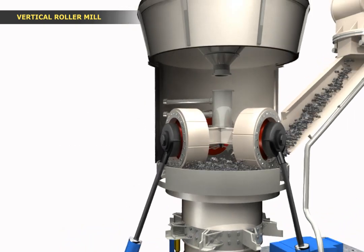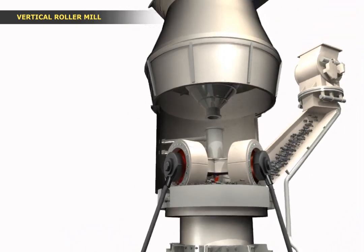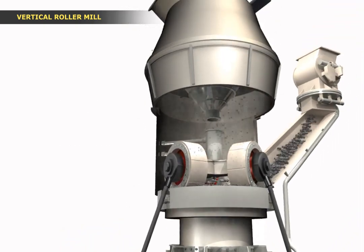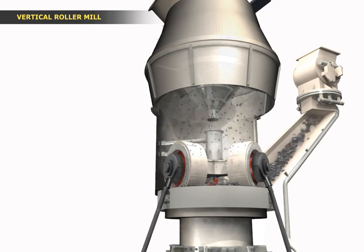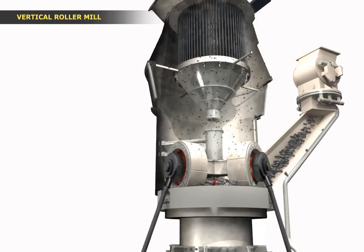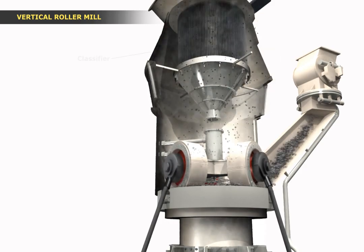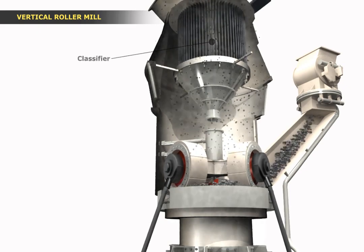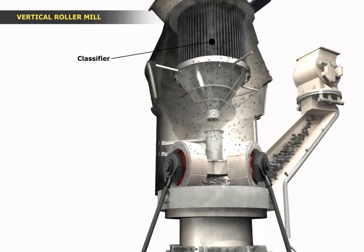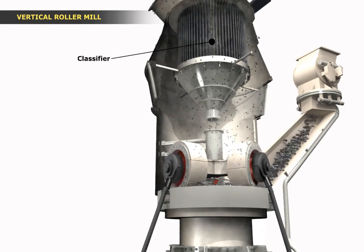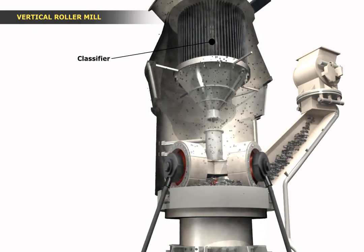We'll also look at the mechanism by which hot gases directed vertically from the bottom of the mill entrain and dry the ground feed as the feed is swept up into the rotating classifier.